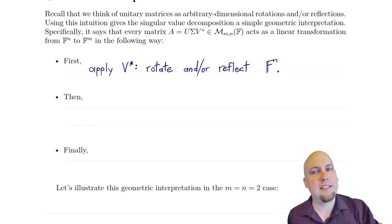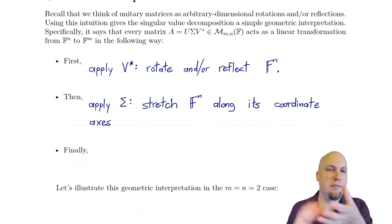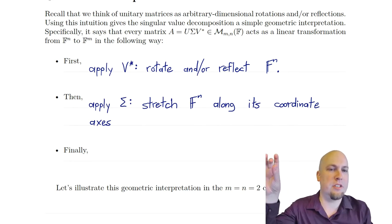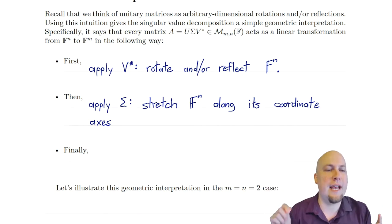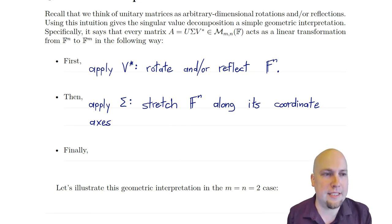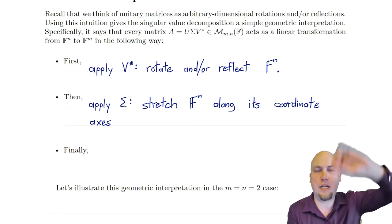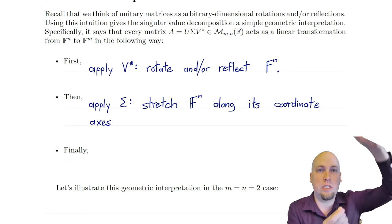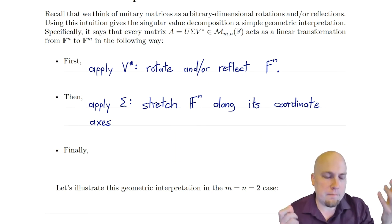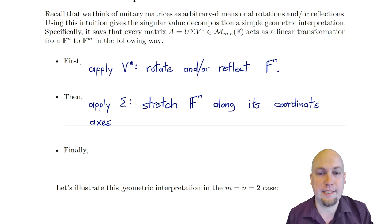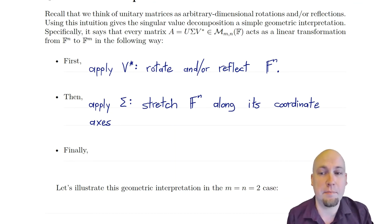Next, it multiplies by sigma — by this diagonal matrix. What it does is it just stretches F^n along its coordinate axes. It stretches in the x direction and by some amount in the y direction; it could be bigger than 1 so it's a stretch, or less than 1 so it's a shrink. But it's stretching along those coordinate axes, and all of those numbers are positive, so it's not doing any reflections in this step.